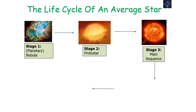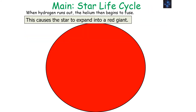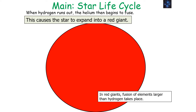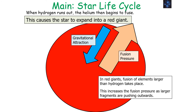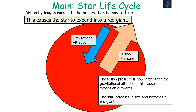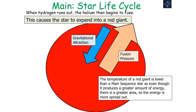When hydrogen starts to run out and helium becomes the main fuel source, helium begins to fuse inside the core of the star. This causes the star to expand into a red giant. In red giants, the fusion of elements larger than hydrogen takes place, which increases the fusion pressure outwards as larger fragments are pushed outward during fusion. Because the fusion pressure is now larger than the gravitational attraction, the star increases in size and becomes a red giant.